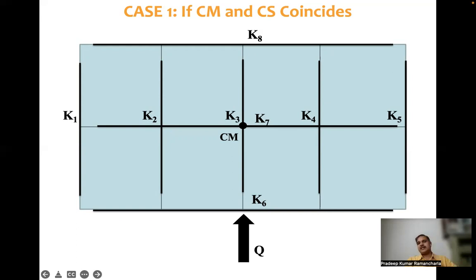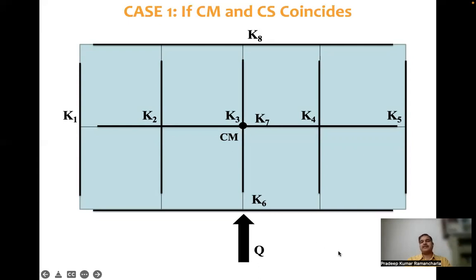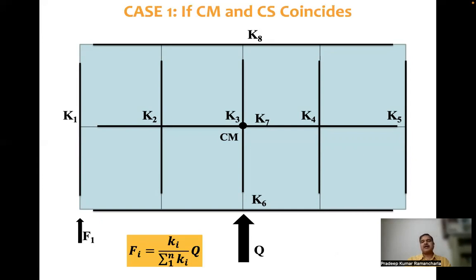If we apply the diaphragm level force qi at any floor, the force resisted by a particular frame depends on its relative stiffness. For example, F1 equals k1 divided by sigma k, multiplied by q. In this way we can compute forces on each frame at that level — both in the x direction and y direction depending on the applied force.